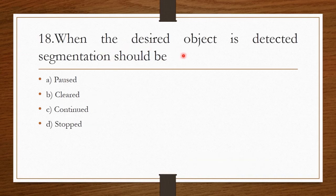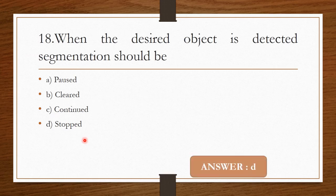Question 17: When the desired object is detected, segmentation should be — passed, cleared, continued, or stopped. When the desired object is detected, the segmentation should be stopped. Option D is the correct answer.